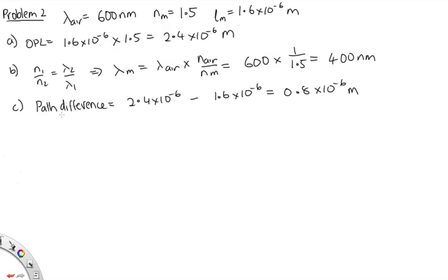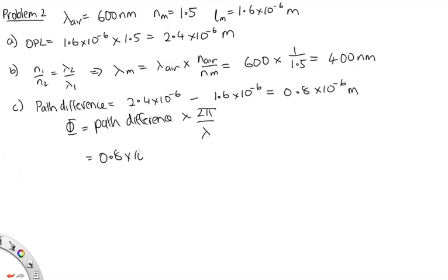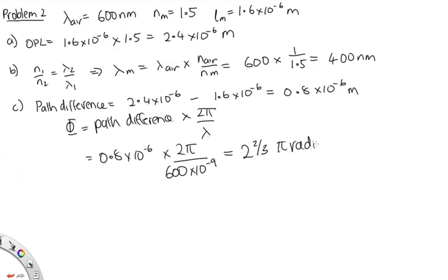This path difference is effectively how much further the light would have traveled through air counting the same number of wavelengths. To find the phase difference, we have: phase difference equals path difference × 2π / lambda = 0.8 × 10⁻⁶ × 2π / (600 nm), which gives 2 and 2/3 π radians — that's 2π, one complete phase, and then another 2/3 π.